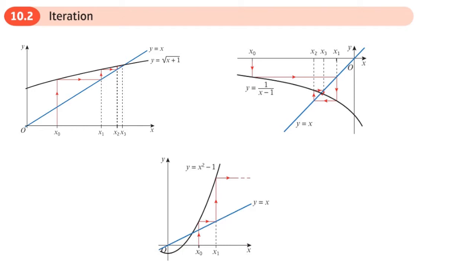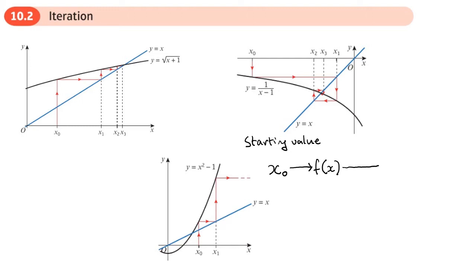Basically, iteration is where you have some sort of rule or function — we'll call that f of x. You've got some function f of x which we're going to use to help us find a root, and we have some starting value that we're going to put into f of x. Let's call this starting value x0, and x0 is going to go into f of x. When you do that, out comes another value x1.